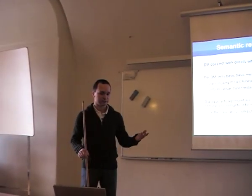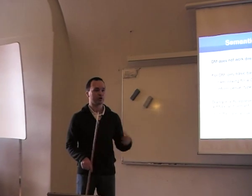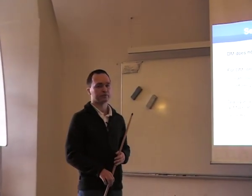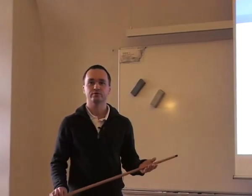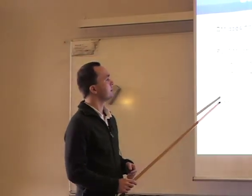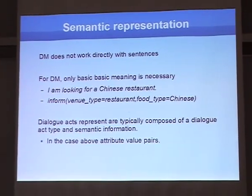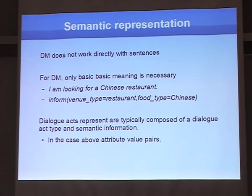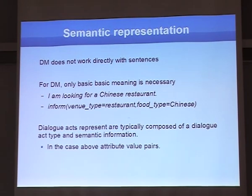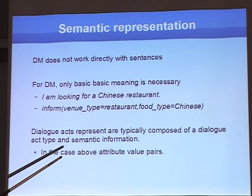A typical dialogue system doesn't work directly with word sequences. Instead it uses semantic interpretation of input utterances — we work with dialogue acts. For example, from the sentence about looking for a Chinese restaurant, we extract that the user is looking for a venue, specifically a restaurant, and the food type is Chinese. The overall dialogue act type in this case is 'inform' — the user is informing the computer of the desired venue properties.